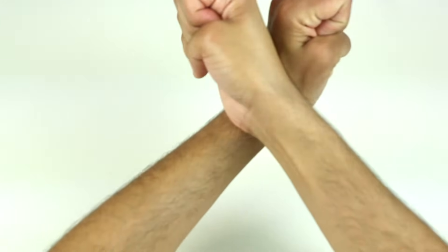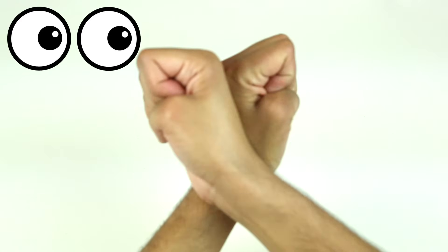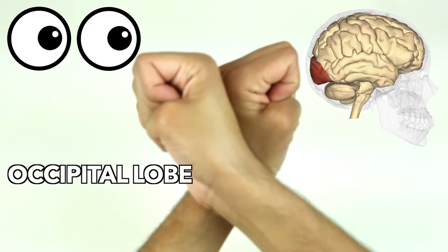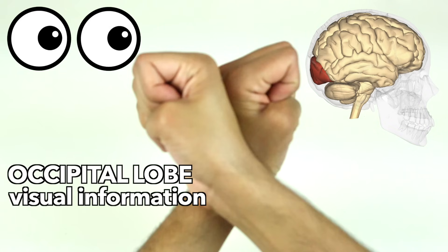Now look at the back of your hands. You'll notice they look like eyes. This will help you to remember the occipital lobe, the area responsible for your visual information and how it's located in the back of your brain. Have you ever hit the back of your head and seen stars? It's because you hit your occipital lobe.